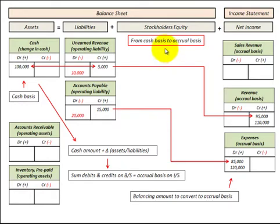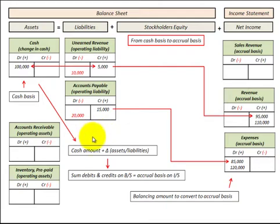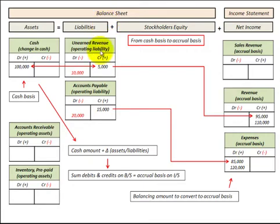In this presentation I'm going to show how to convert from the cash basis to the accrual basis, going through a detailed example with sales revenue involving accounts receivable and the cash account. When converting from cash to accrual basis, it's as simple as taking our cash amount and looking at the changes in our assets or liabilities, summing our debits and credits, and finding the balancing amount in either a revenue or expense account.